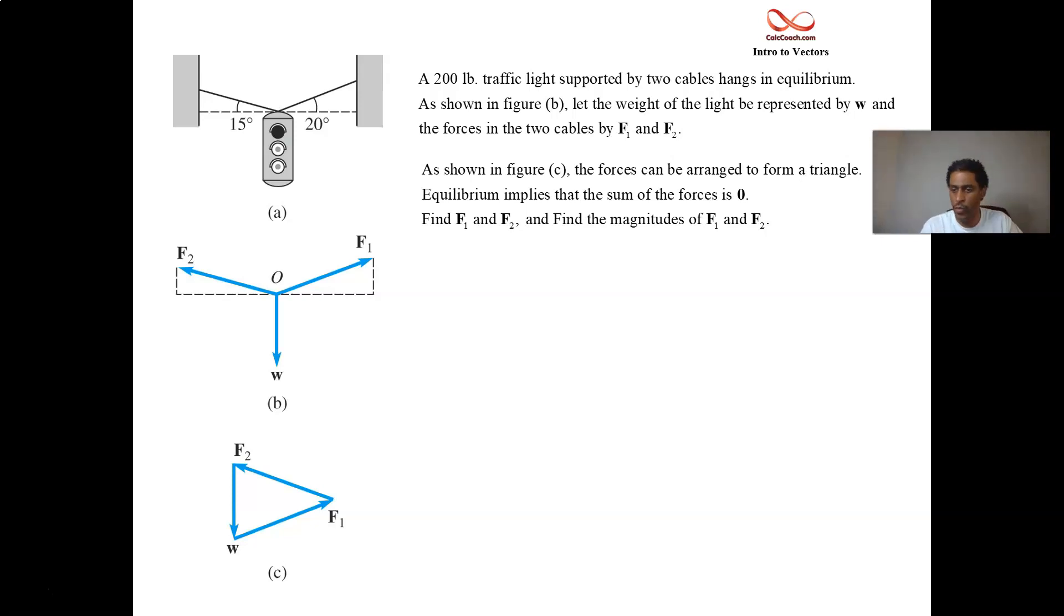We need to set up our equations. Take a good look at the drawing B there. We represent the magnitude of F1 using double bars, the magnitude of F2, and then there's W. There's a 20 degree angle with F1, and there's the 15 degree angle with F2.